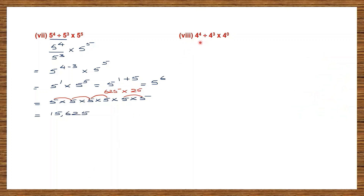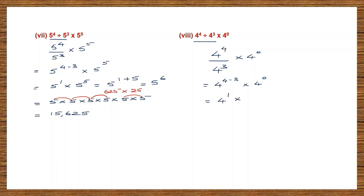Question 8: 4 raised to the power of 4 divided by 4 raised to the power of 3 into 4 raised to the power of 0. Do division first: 4 to the power of 4 minus 3 is 4 to the power of 1, into 4 raised to the power of 0. Any number raised to the power of 0 is 1, so 4 to the power of 1 into 1 equals 4. The answer is 4.